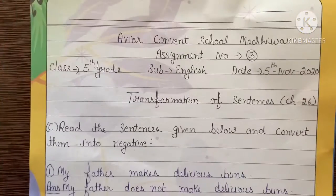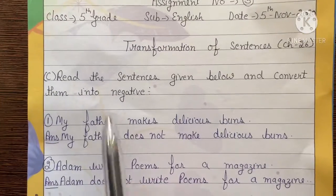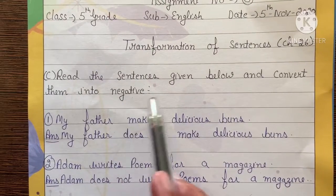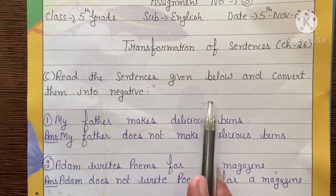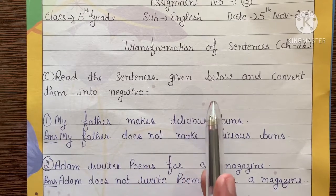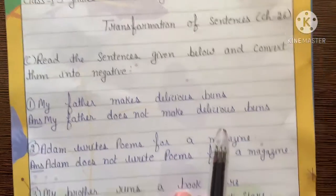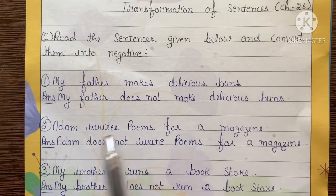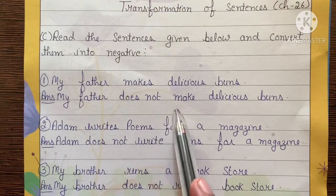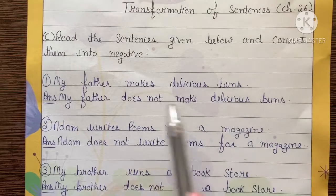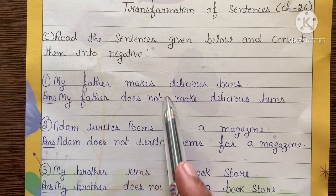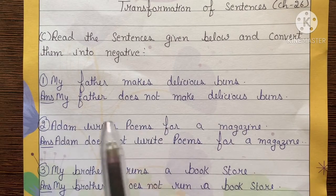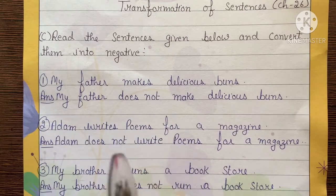Now come to the assignment, Part C: read these sentences given below and convert them into negative. 'My father makes delicious buns' becomes 'My father does not make delicious buns.' Here 'does not' has come in, which depicts that the sentence has gone from positive to negative.